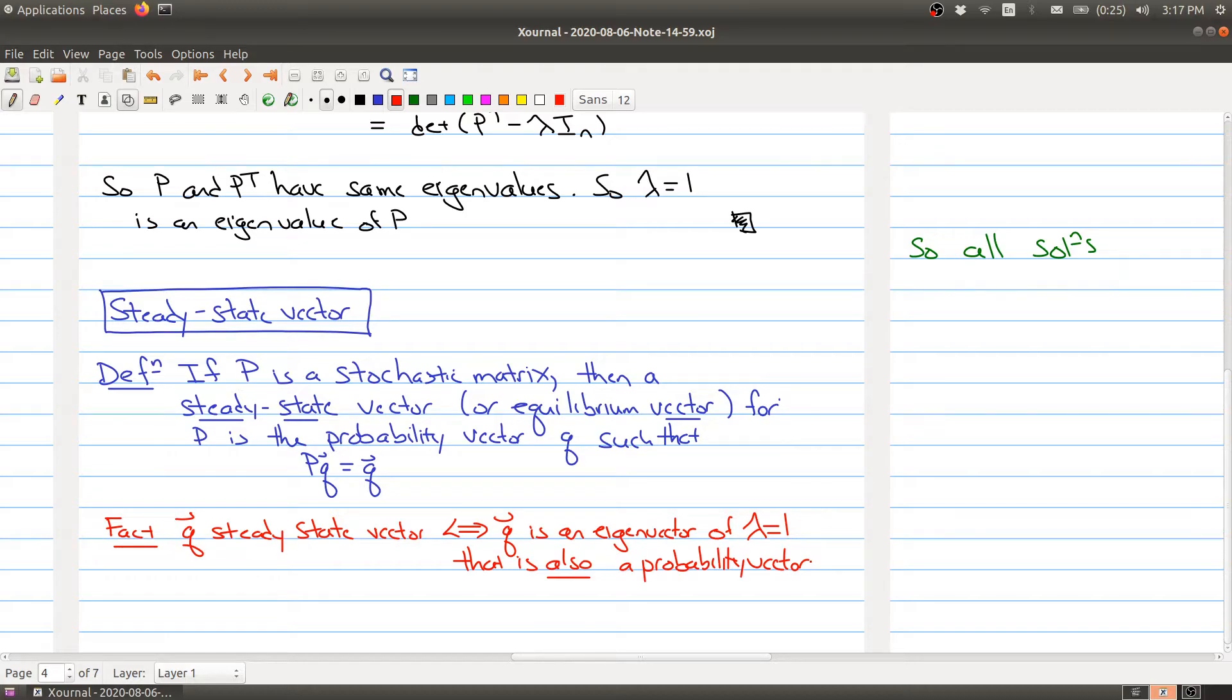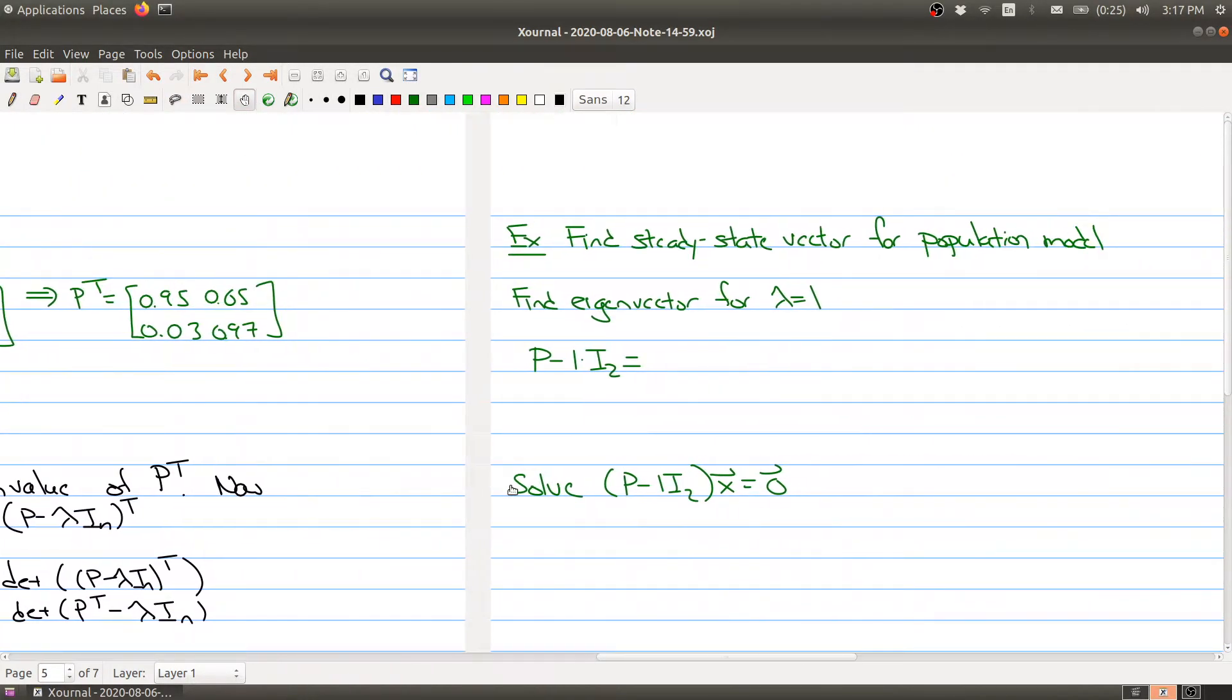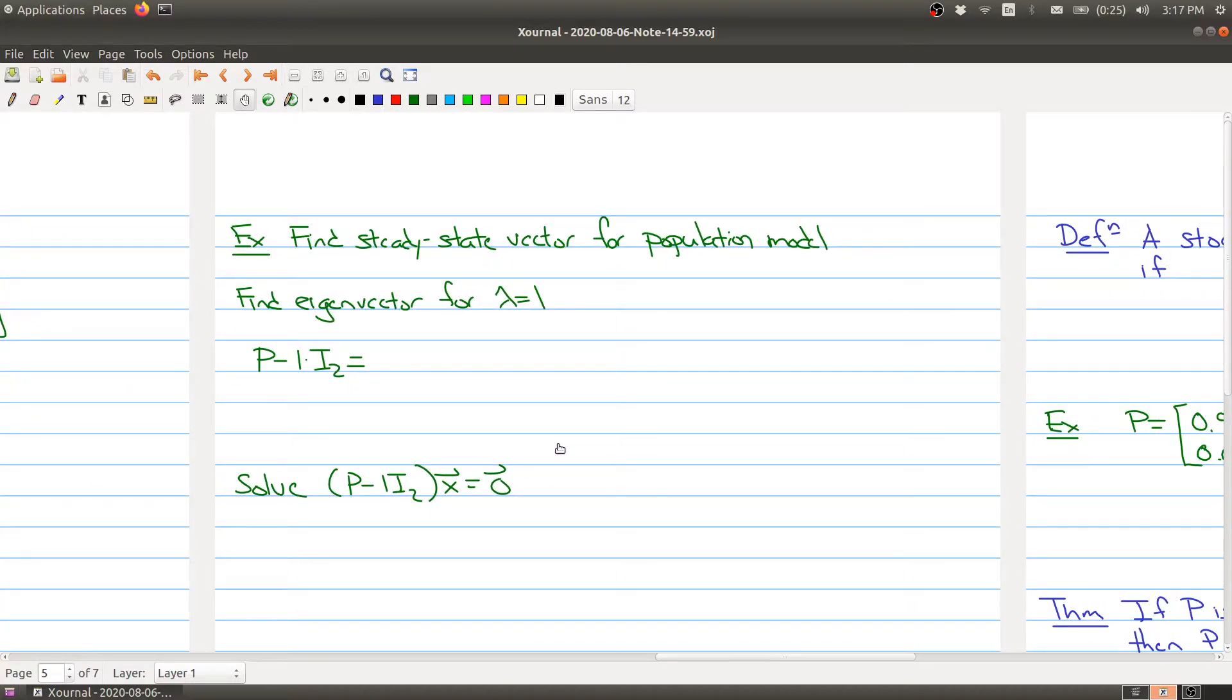So one way to think of a steady state vector is to find an eigenvector of lambda equals one and make sure that it's a probability vector. So because of this way of defining a steady state vector, we can actually use this to find steady states for our various examples.